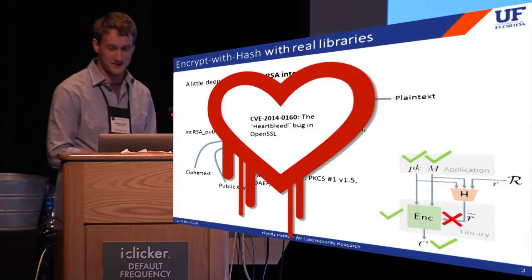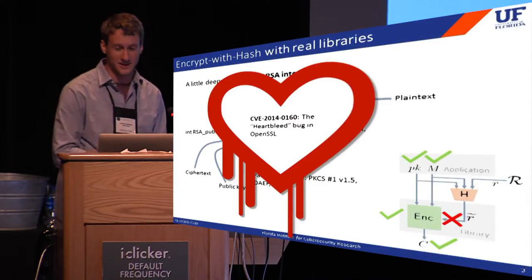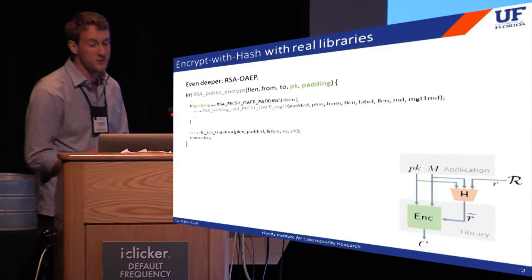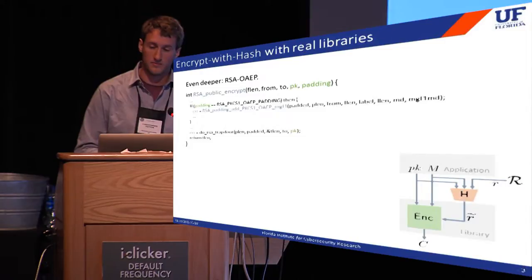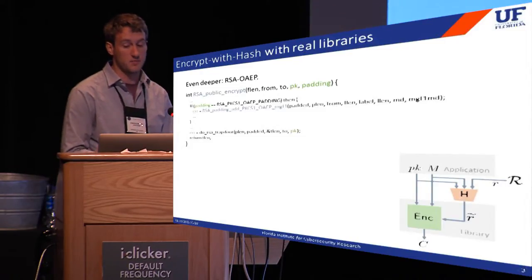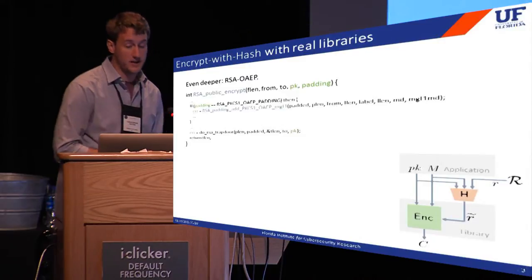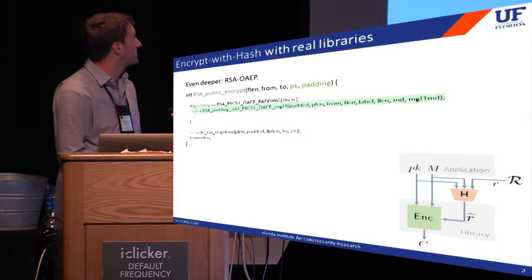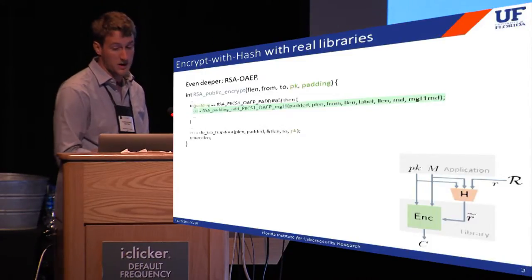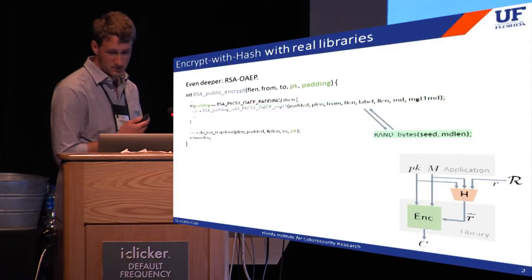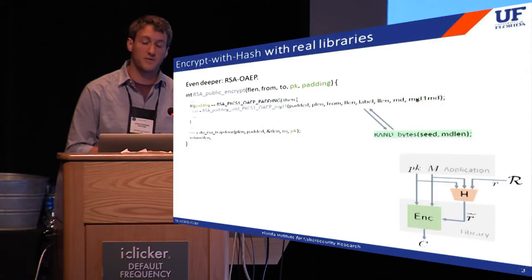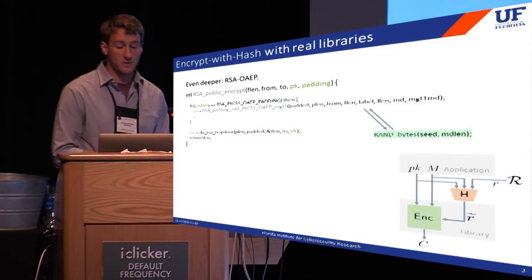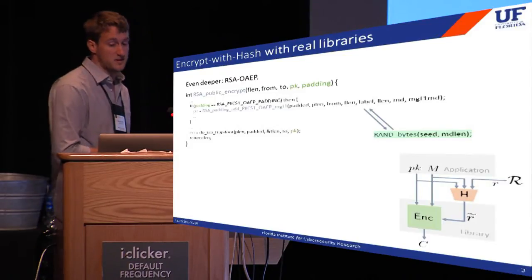Let's dig a little deeper into the code. The first question is: where are the coins coming from? Here we have a code snippet of RSA-OAEP — the implementation in OpenSSL. The function that implements the padding takes as input the message, as well as some other stuff we can ignore for this talk, and outputs the padded message. This in turn invokes a function called RAND_bytes, which fetches the required number of bytes from OpenSSL's RNG. So it's down at this lowest level that you have the first chance to touch the coins.